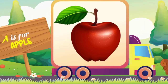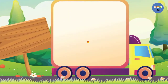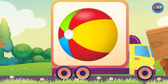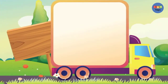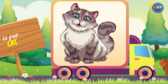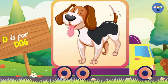A is for Apple. B is for Ball. C is for Cat. D is for Dog.